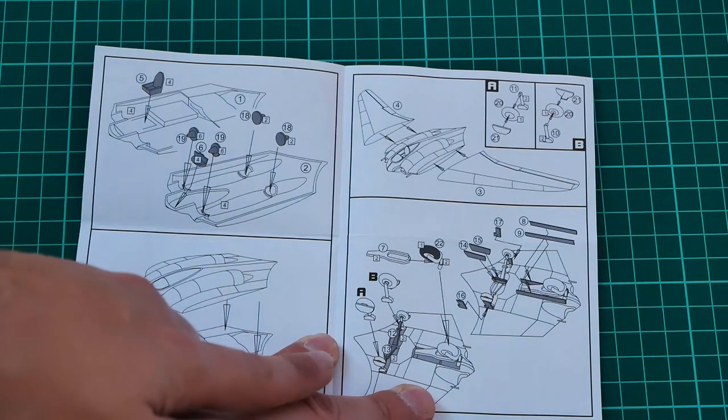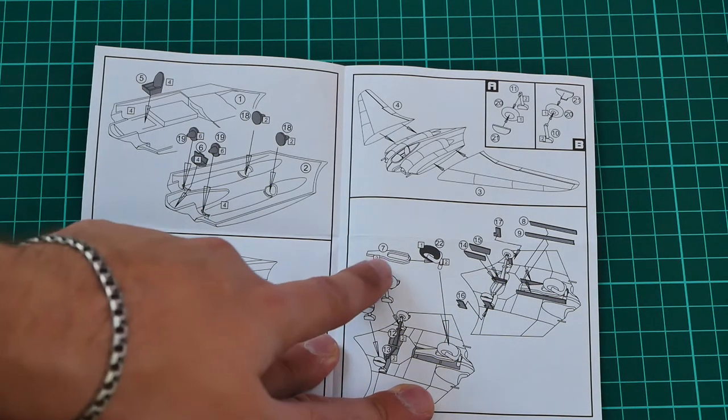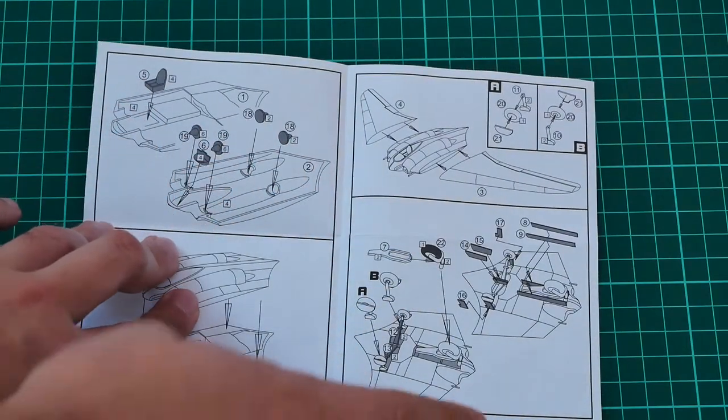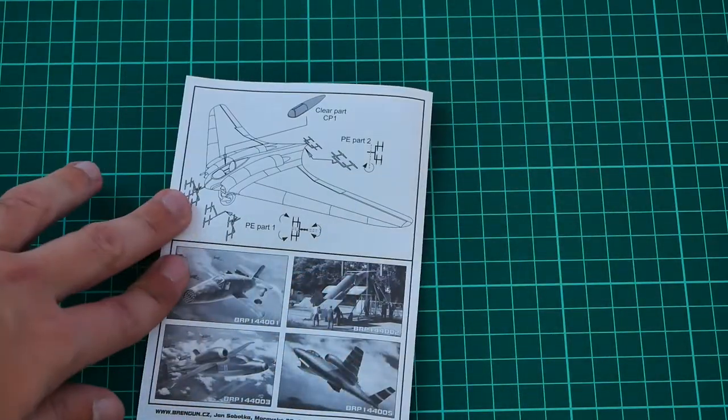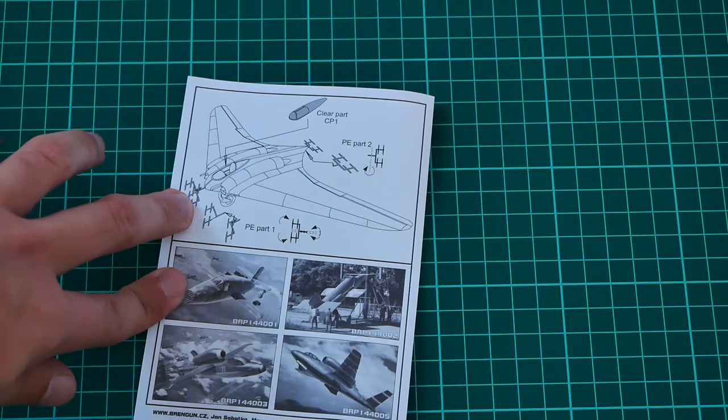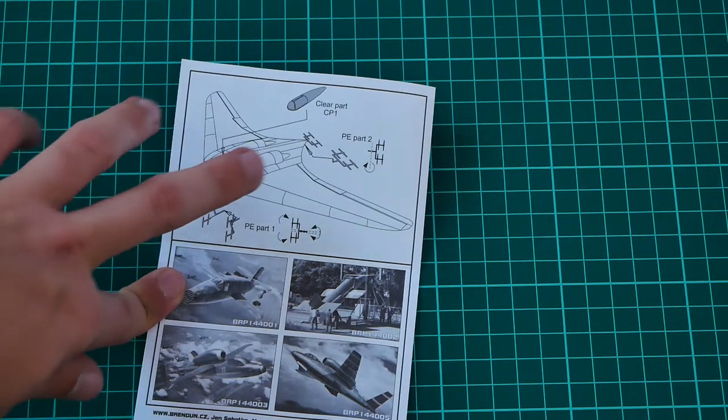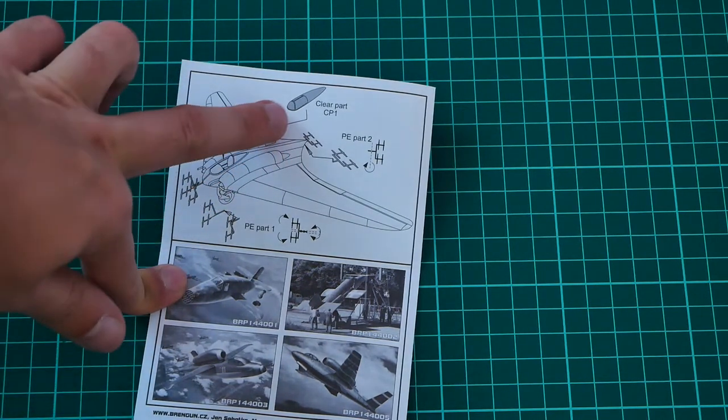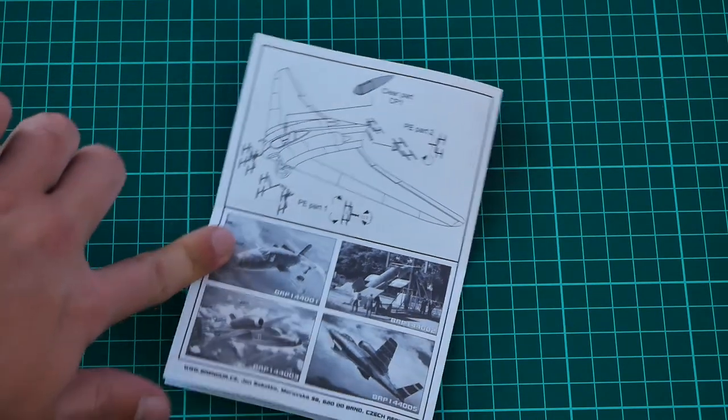Note that then we close the fuselage halves and attach the wings. Here you have also assembly of the landing gear system, landing gear doors, and as far as I understand, this part will be used for the frontal landing gear leg.